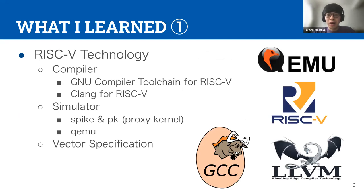Now I'll talk about what I learned through this mentorship. First, it gave me a better understanding of RISC-V technology. My PC is equipped with an x86 processor, so I needed to prepare a compiler for RISC-V in order to cross-compile. The two most famous compilers are Clang and GCC, each of which has subtle differences, and I used them for interpreting RISC-V assembly code. Throughout using both compilers, I got to understand the differences between them.